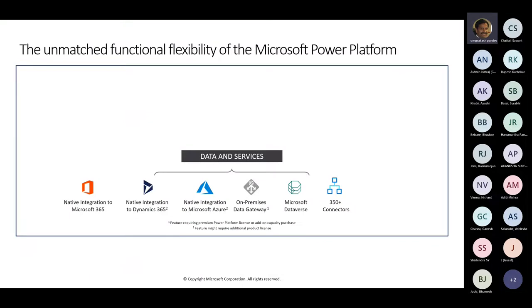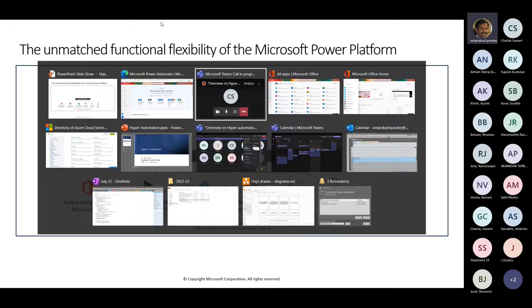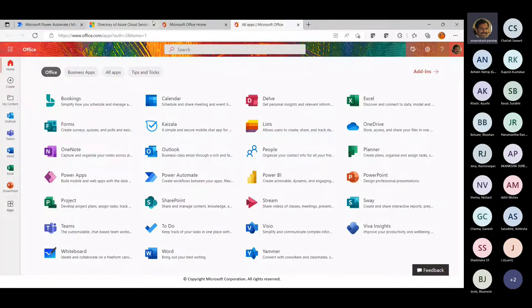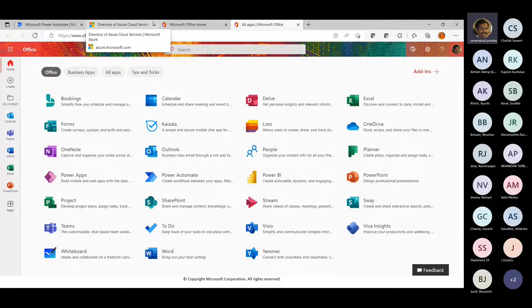Apart from this, if we have a Dynamics 365 license and purchase those services, you can integrate that as well. The third member you see is native integration to Microsoft Azure. One would be surprised asking what is the difference between Office 365 and Azure. Office 365 and Microsoft 365 are SaaS solutions, whereas Azure is all about infrastructure services and platform as a service.